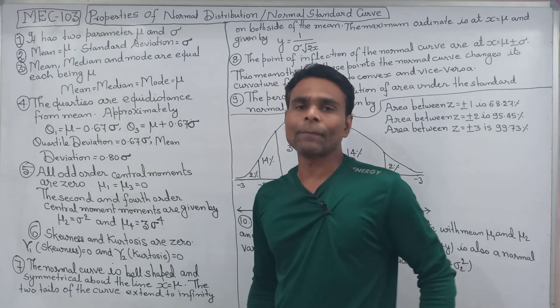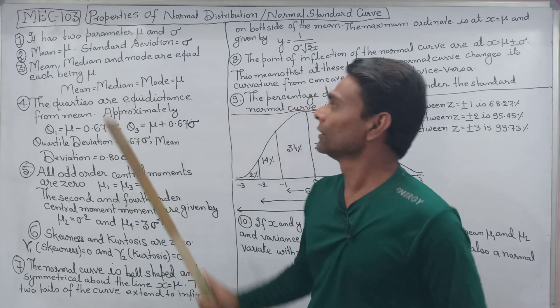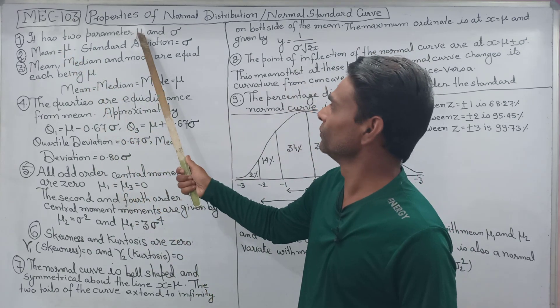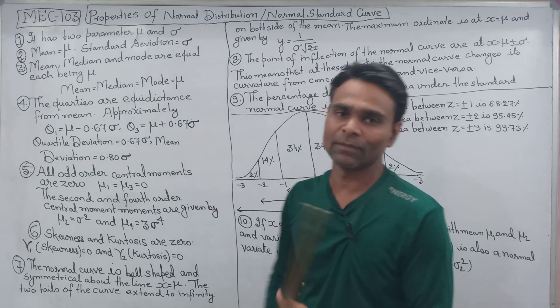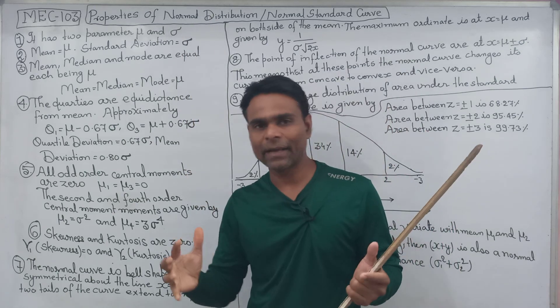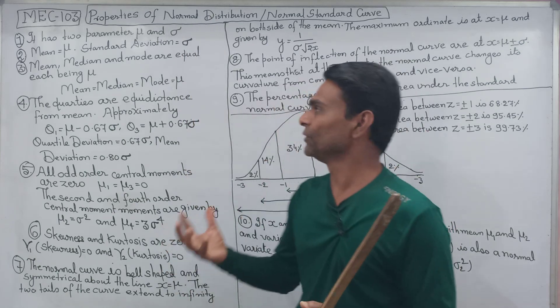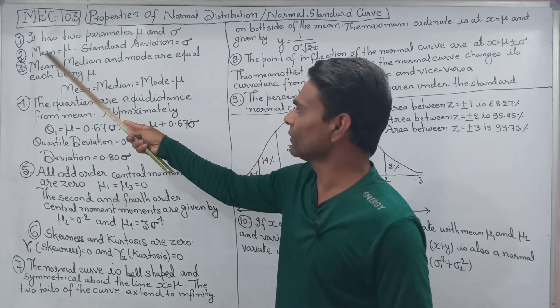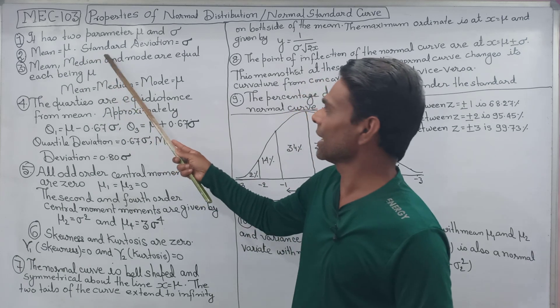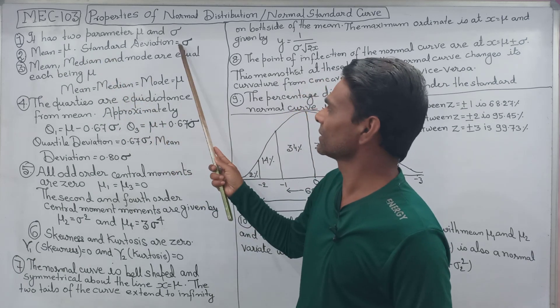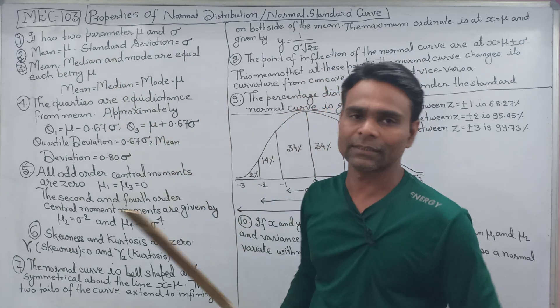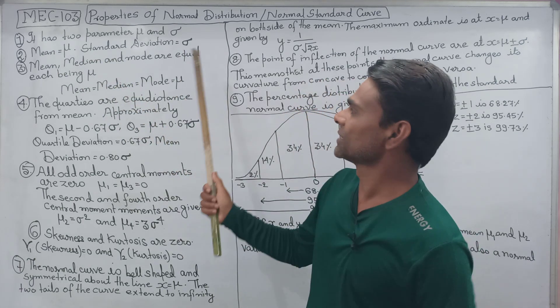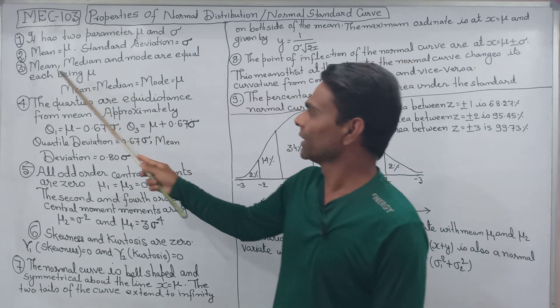It has two parameters: mu and sigma. Mu is equal to mean, and standard deviation is denoted by sigma.